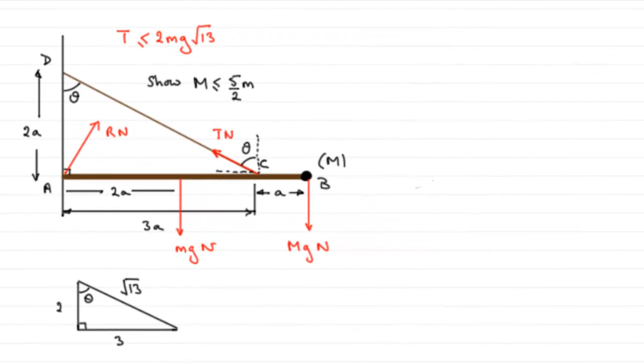Now for this last part, then we're told that the particle at B is now replaced by a new particle of mass big M here. So I've drawn in the weight here of that particle Mg Newtons.